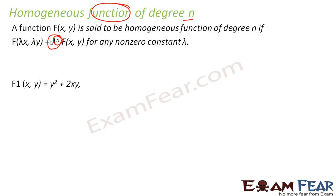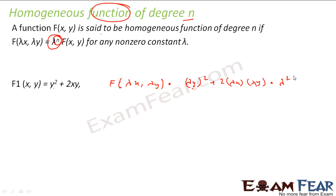Let's take some examples. For example, take f₁(x, y) = y² + 2xy. If I find f₁(λx, λy), I replace x with λx and y with λy, giving (λy)² + 2(λx)(λy) = λ²y² + 2λ²xy = λ²(y² + 2xy) = λ² · f₁(x, y). Thus, this is a homogeneous equation of degree 2.